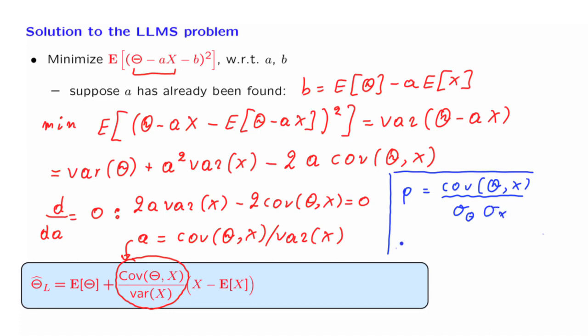Using this relation, we can now write the coefficient a as the covariance, which is rho times sigma theta sigma x, divided by the variance of x, which is sigma x squared.